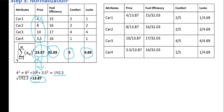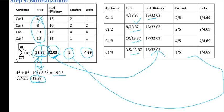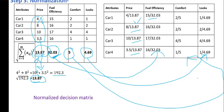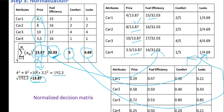Once the square root is calculated, we divide each X_ij by this value. For example: 4 divided by 13.87, 8 divided by 13.87, 10 divided by 13.87, and 3.5 divided by 13.87. Similarly, for fuel efficiency all values are divided by 32.03, for comfort all attributes are divided by 5, and for looks all attributes are divided by 4.69. The resulting matrix is known as the normalized decision matrix.